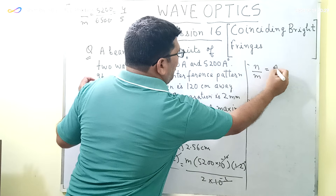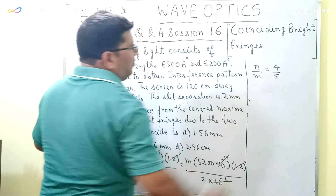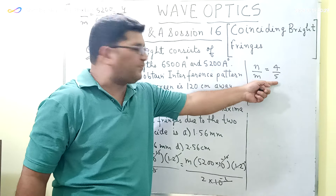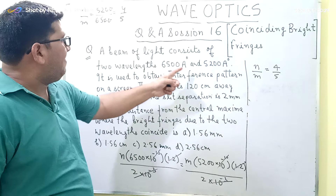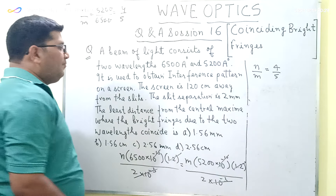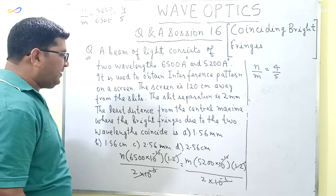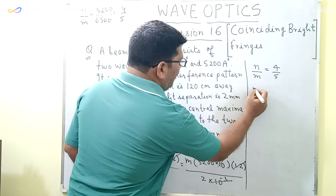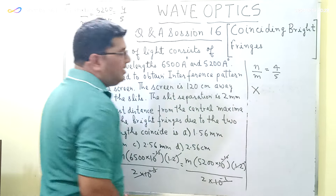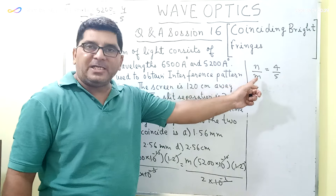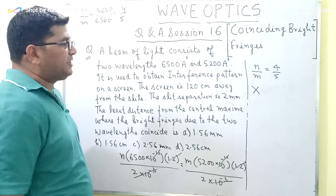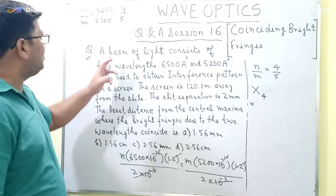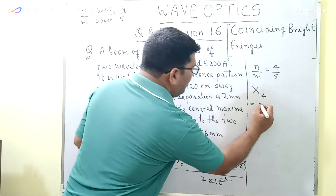From the ratio n/m = 4/5, we can say that the 4th bright fringe due to the beam of light of wavelength 6500 angstrom coincides with the 5th bright fringe due to the beam of light of wavelength 5200 angstrom. To find the least distance from the central maxima where the bright fringes coincide, we calculate the distance of the 4th bright fringe for 6500 angstrom.